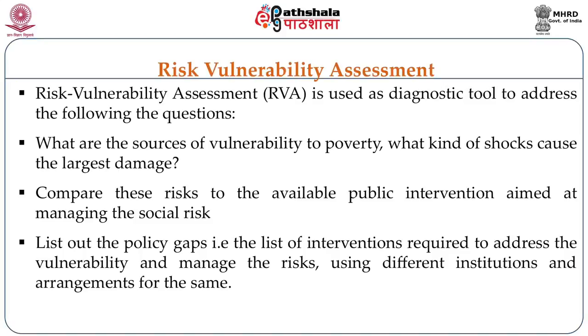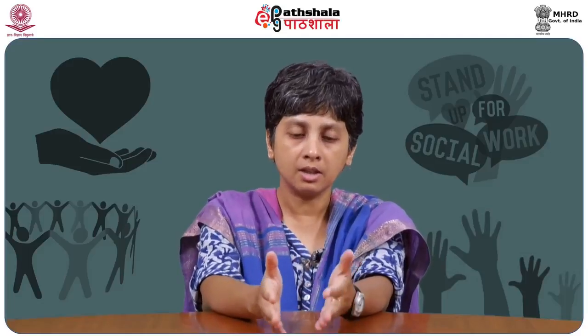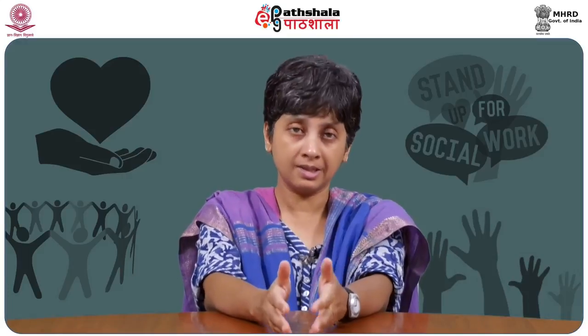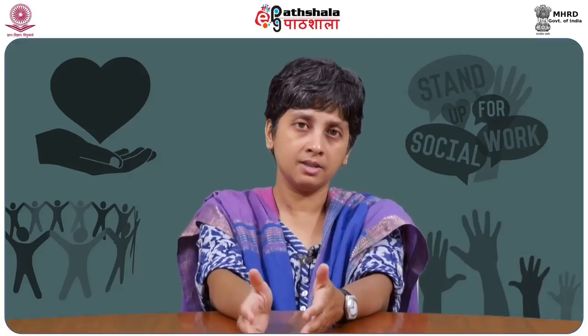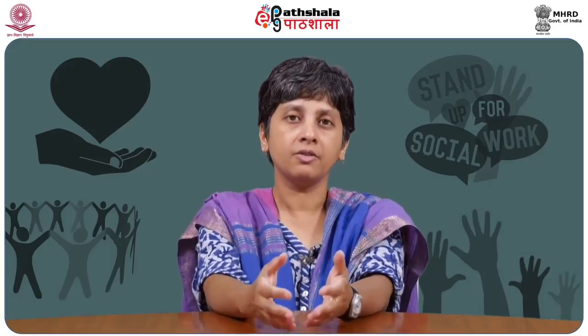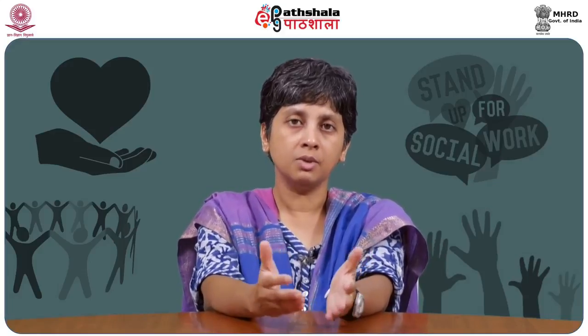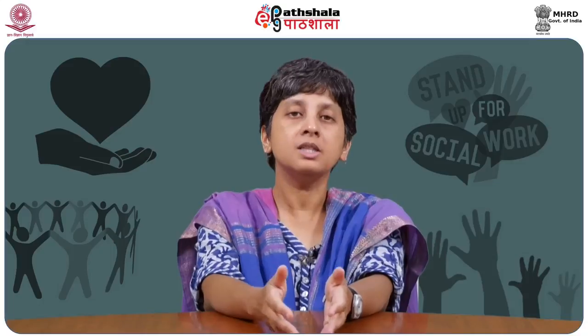The process involves listing out policy gaps — the interventions required to address vulnerability and manage risk using different institutions and arrangements. These are the kinds of matrices created to map the main sources of vulnerability, the different types of population at risk, the type of risks involved, and the kind of public interventions that exist — to understand whether enough strategies exist to deal with these vulnerabilities and measure how successful they are.